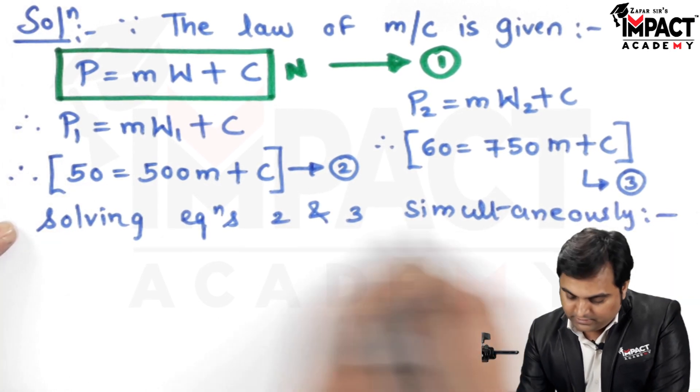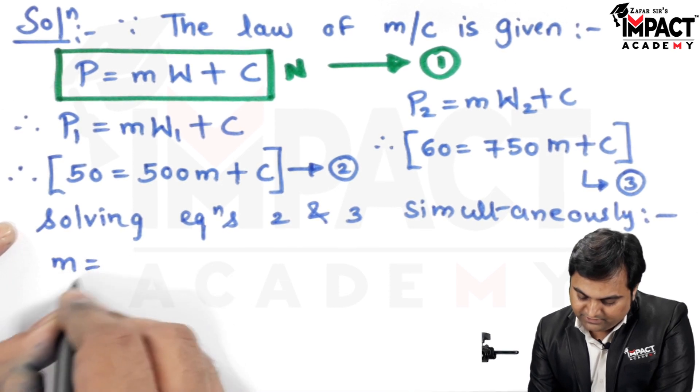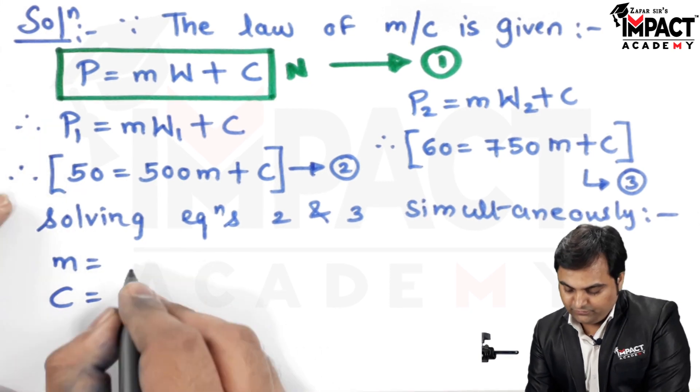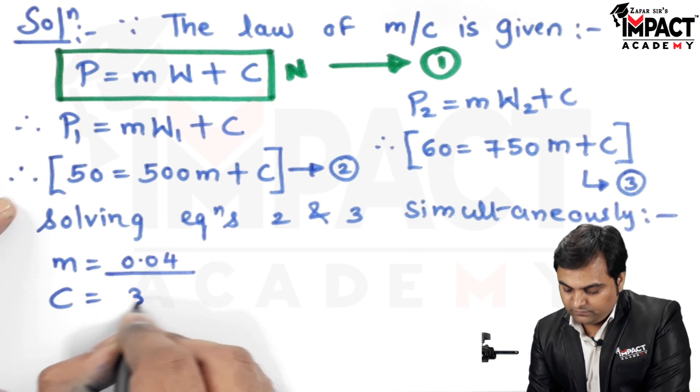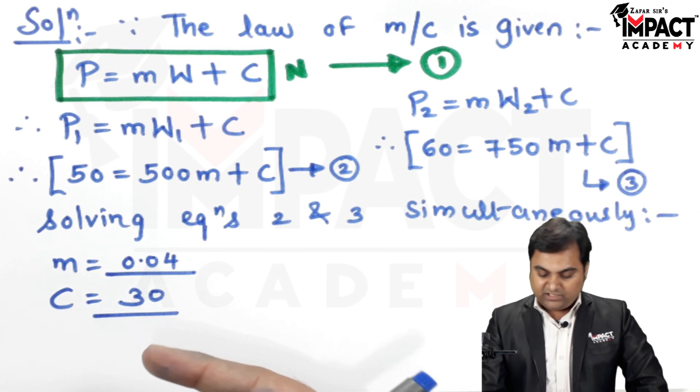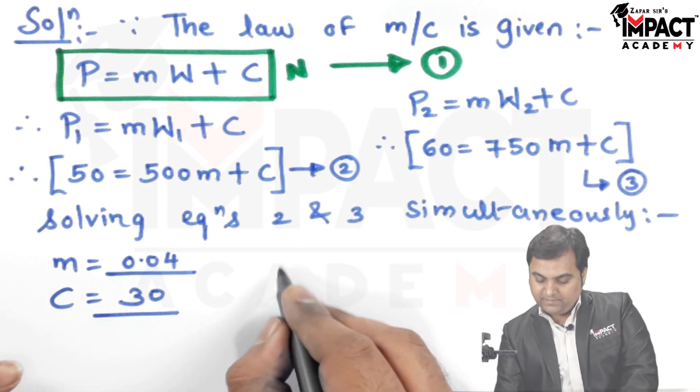I will solve equations 2 and 3 simultaneously and with that I will get the answers. M value comes out to be 0.04 and C is 30.